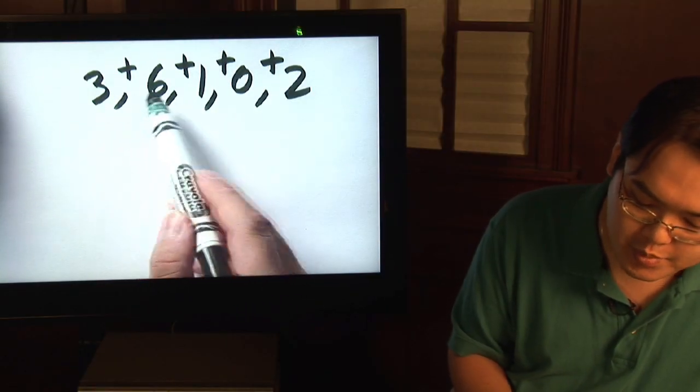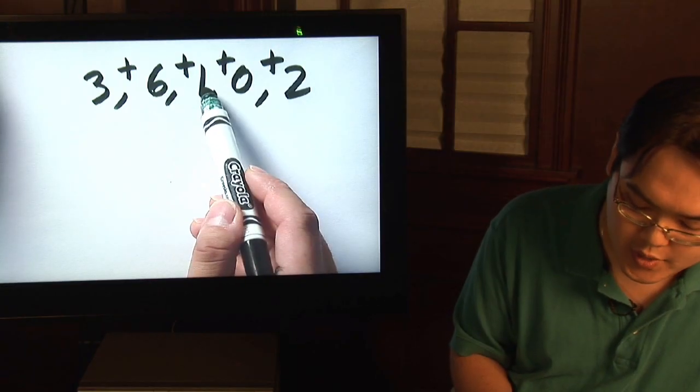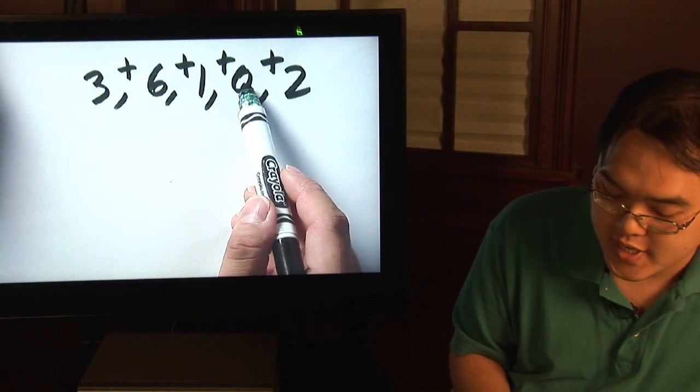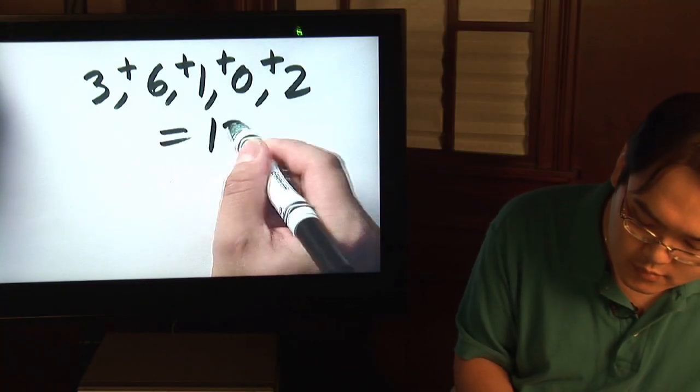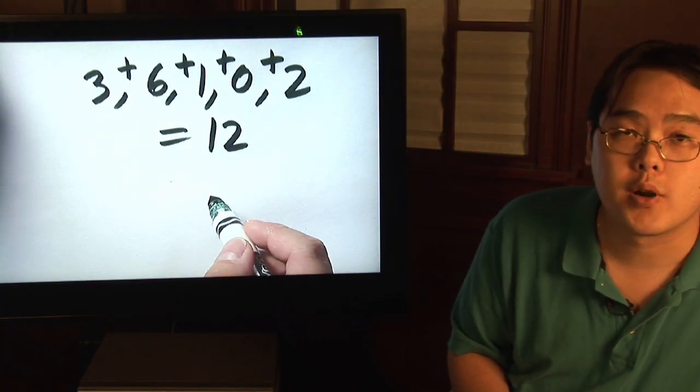3 plus 6 is 9, 9 plus 1 is 10, 10 plus 0 is obviously still 10, and then 10 plus 2 is 12. So that's going to be part of the formula for your average.